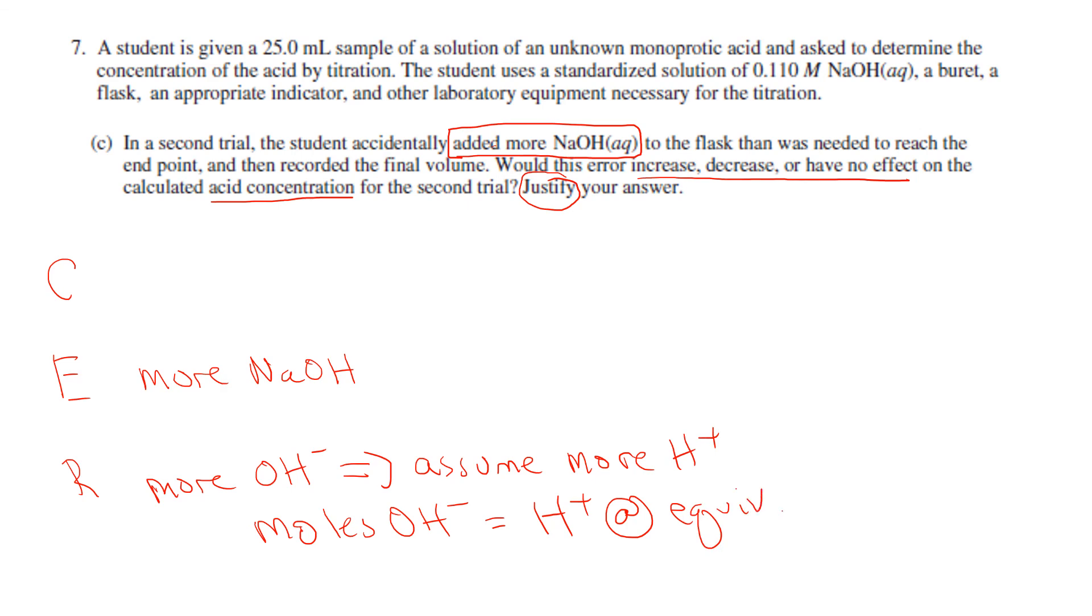So if I have more OH⁻ ions in there, I'm going to assume that there's more hydrogen ions. So making that assumption, if there are more hydrogen ions without changing the volume, my calculated concentration of my acid is going to be greater.